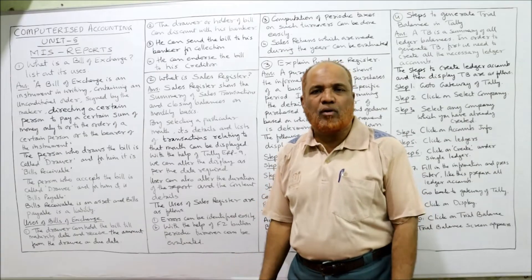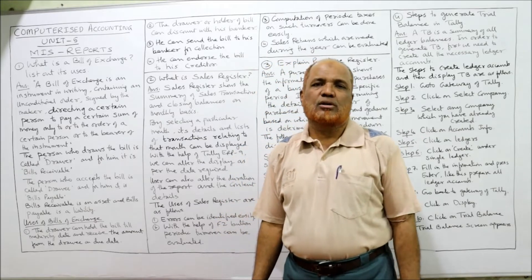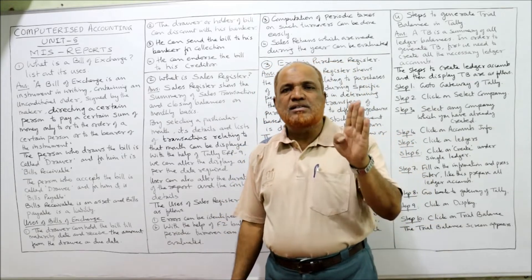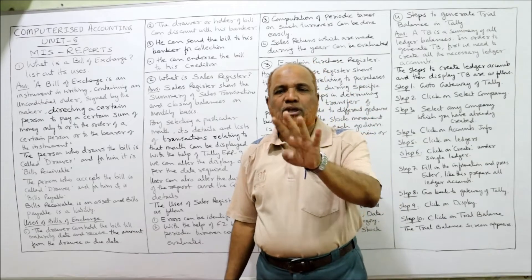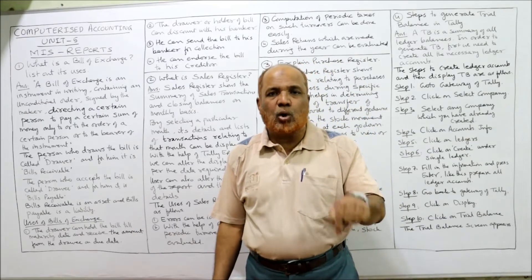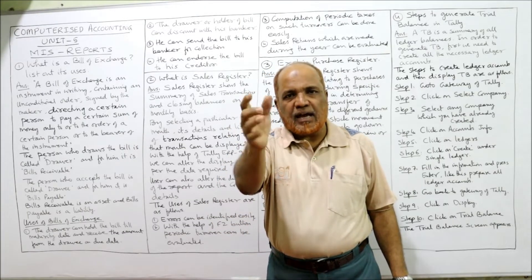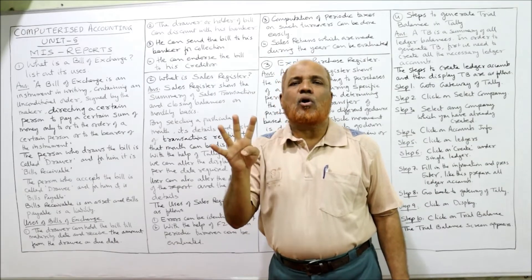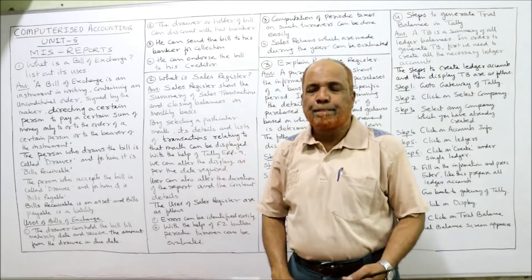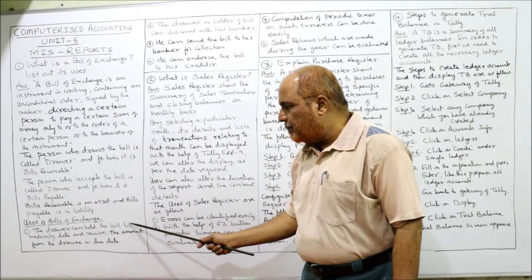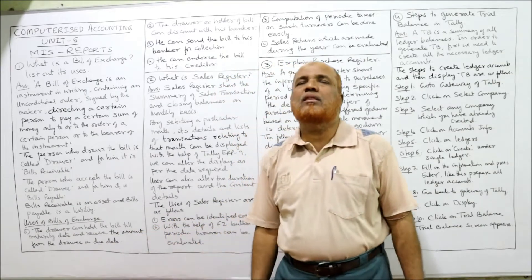Now, what are the uses of the bill of exchange? After receiving the bills receivable, there are four options available to the drawer — four things the drawer can do with the bill.